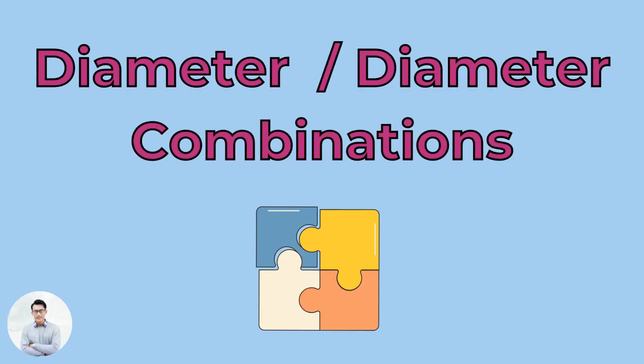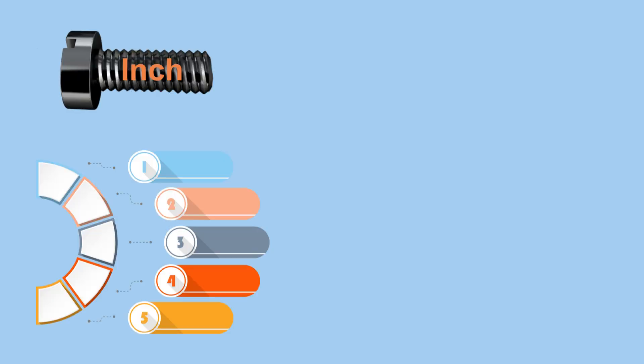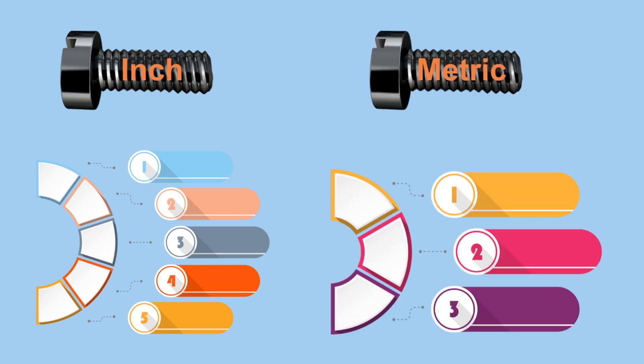Variety of Pitch and Diameter Combinations. The inch thread standard offers a much wider range of pitch options for each diameter. There are usually at least 5 different pitches for each diameter, with 8 to 12 options for popular sizes like ½ or 1 inch. The metric standard offers 2 to 3 pitch options for most diameters, and never more than 5.